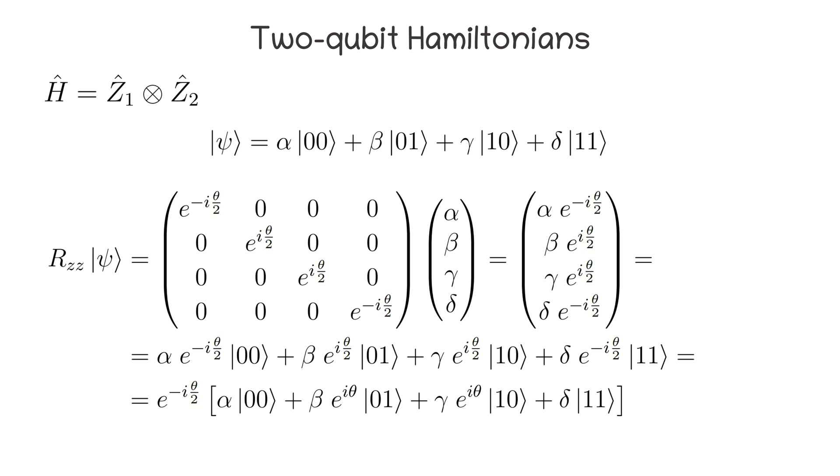From the result we just received, one can see that the phase shift applied to the system is e to the power of minus i theta half if the parity of the qubits in the computational basis is even. In other words, when both qubits are either 0 or 1. Otherwise, the phase shift should be e to the power of i theta half. Thus, for the exact simulation of ZZ Hamiltonian, we need to do the parity check, then apply a phase shift conditioned on the parity and then uncompute.